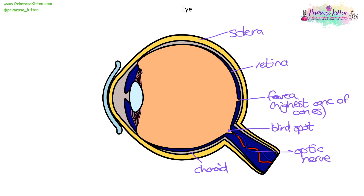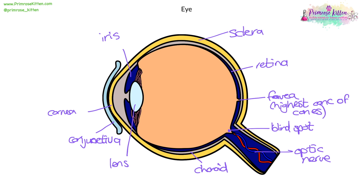Moving towards the front of the eye. This is the conjunctiva. This is the cornea. This is the iris. This is the lens. Then holding up the lens you've got the suspensory ligaments. And you've also got the ciliary muscle.